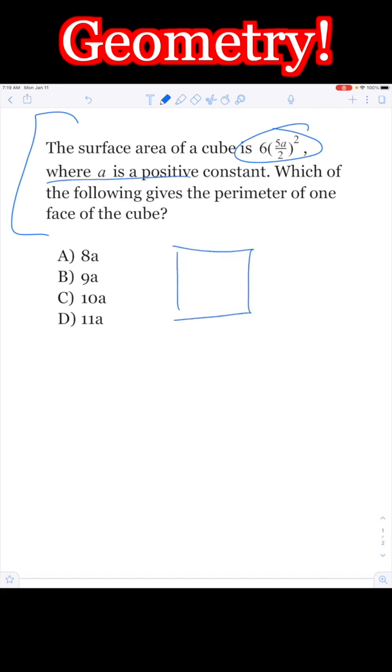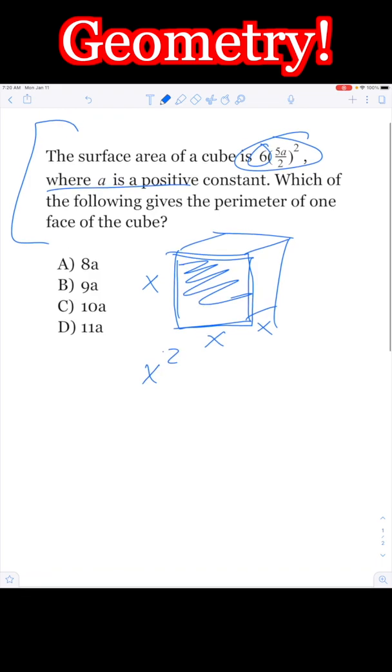Now look, surface area of a cube is really straightforward. We have 6 faces on a cube, and a cube has all sides equal to each other. So if I want the surface area of just one face, it's just going to be x squared, and then I have 6 of those.